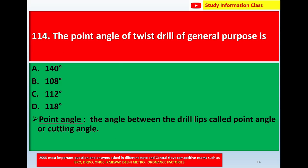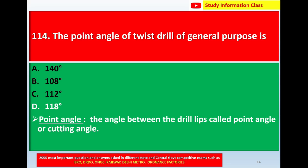Question number 114: the point angle of a twist drill for general purpose is — Option A: 140 degrees; Option B: 108 degrees; Option C: 112 degrees; Option D: 118 degrees. The correct answer is Option D, 118 degrees. The point angle is the angle between the drill lips, also called the cutting angle. This is the diagram of the point angle of a twist drill.